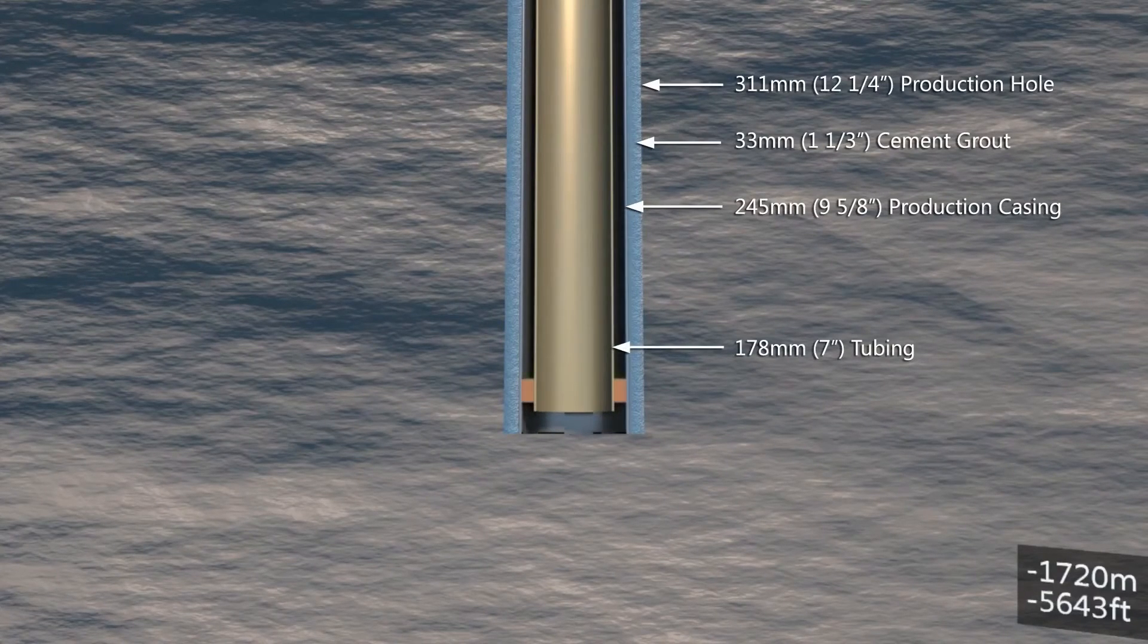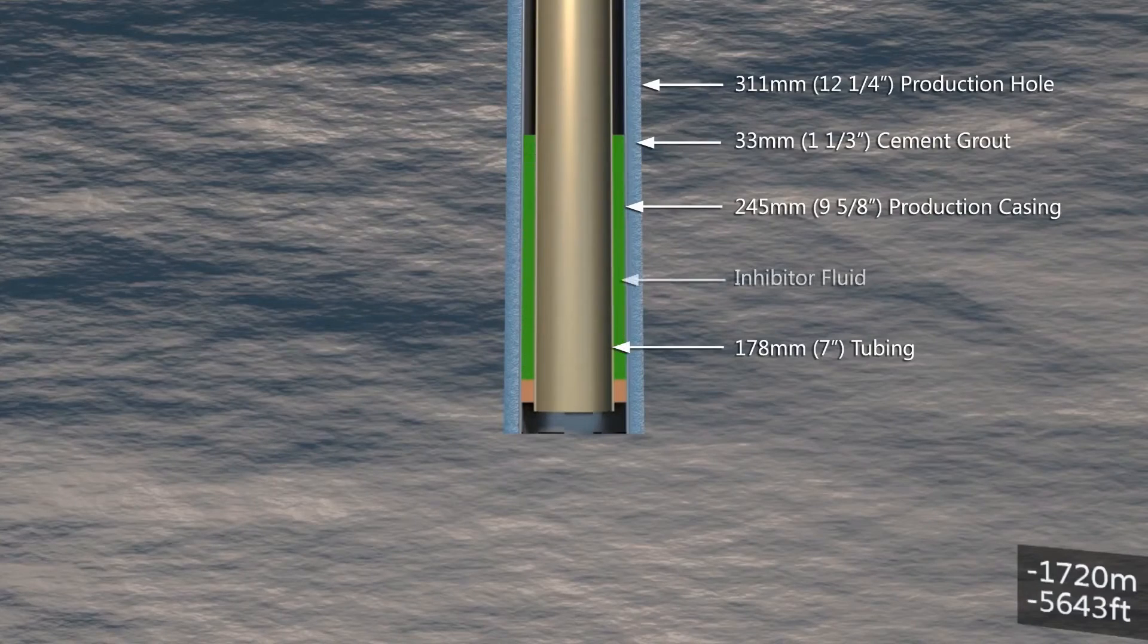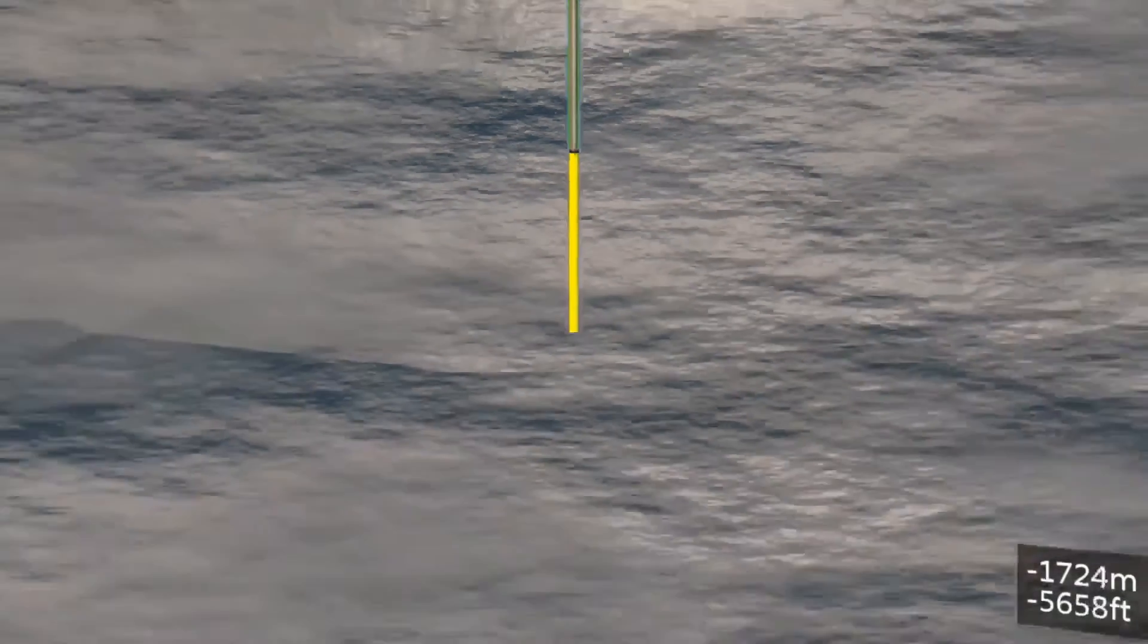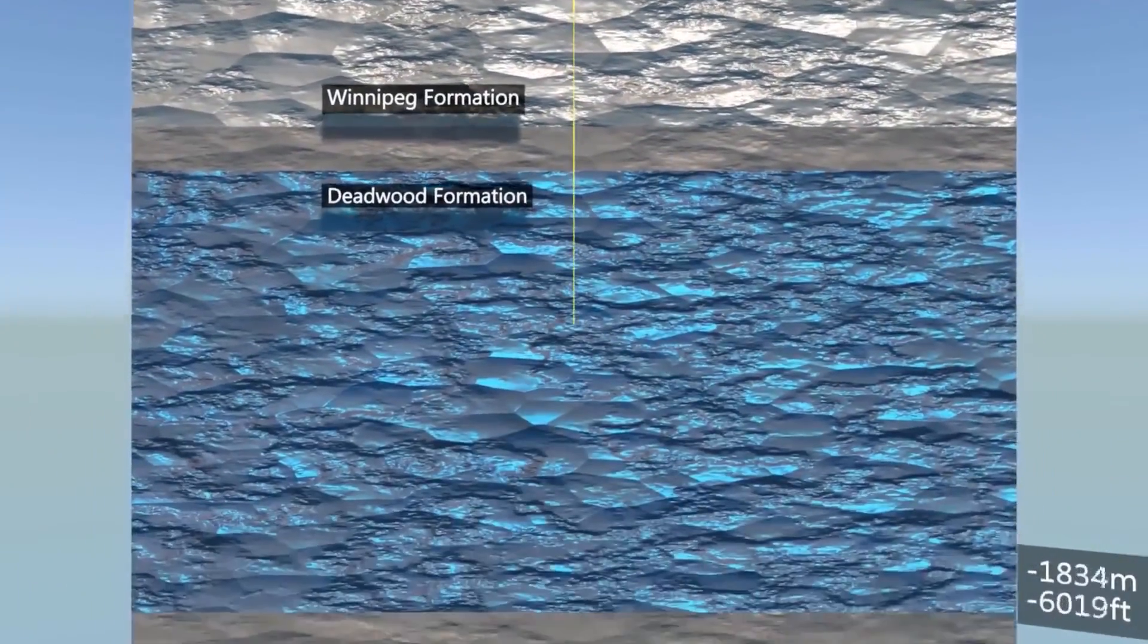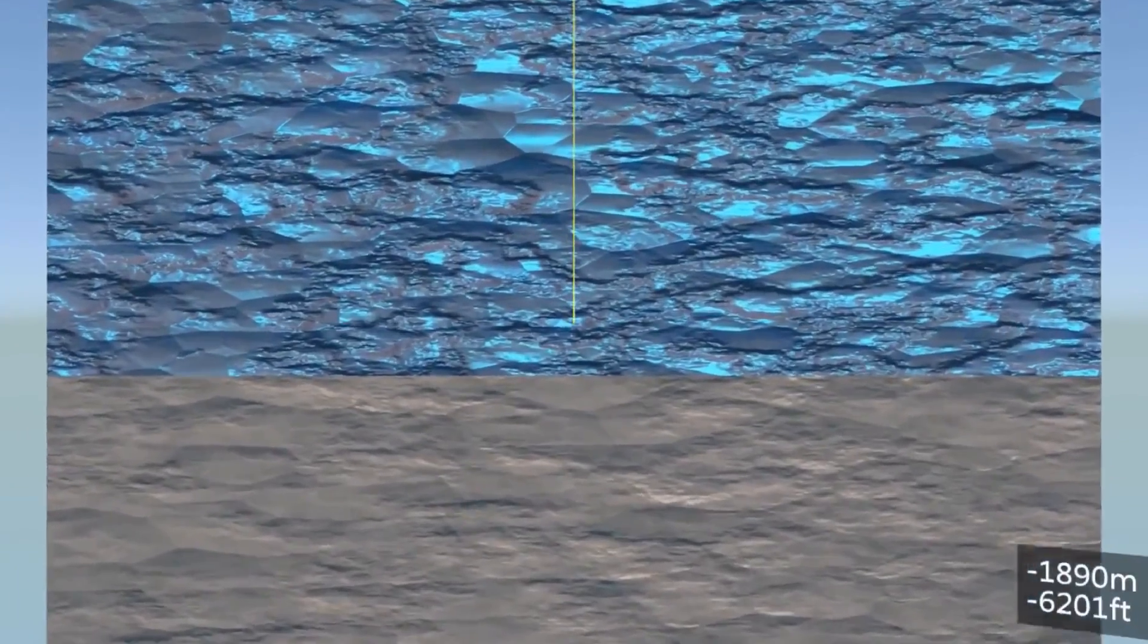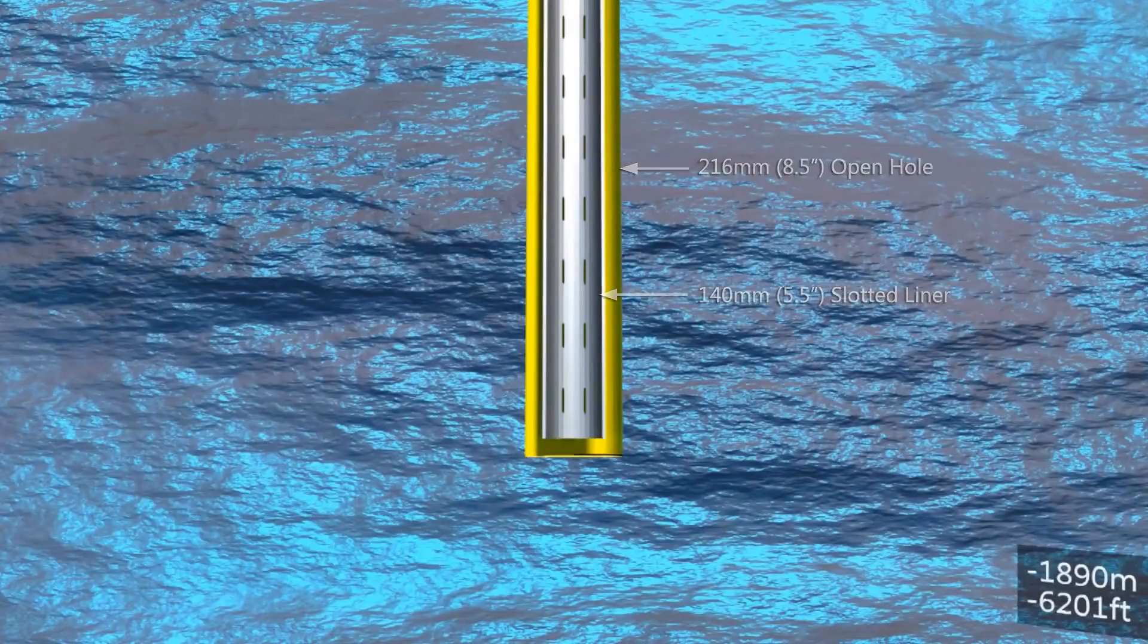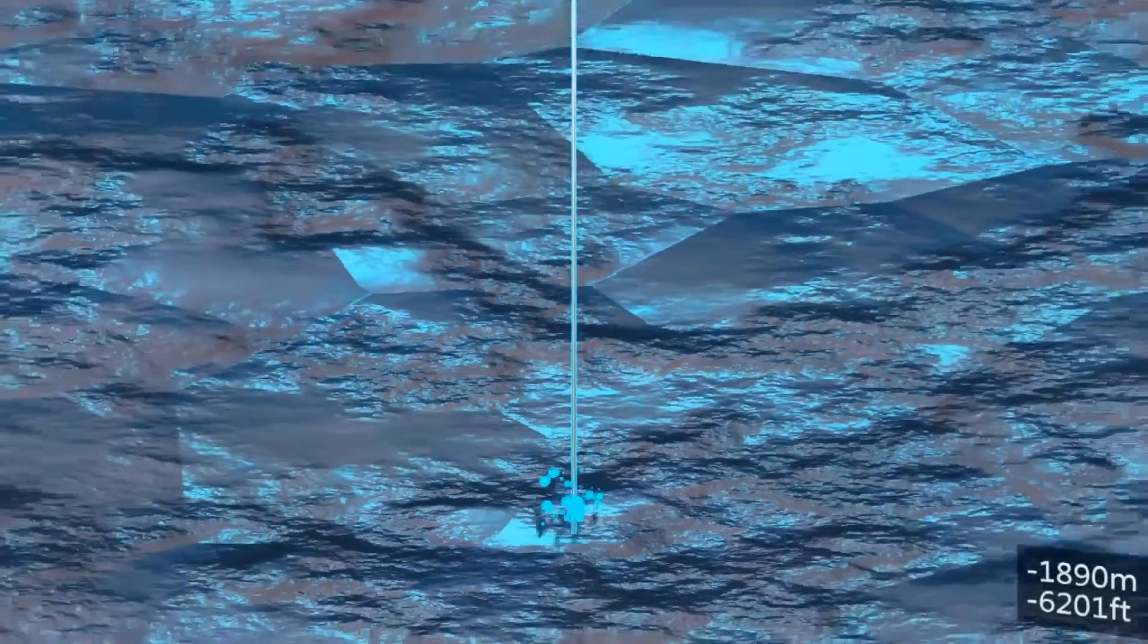The space between the tubing and the casing is filled with an inhibitor fluid. Having the void filled by the fluid gives a continuous indication of the integrity of the disposal well. A tubing is inserted down into the Deadwood and the waste brine is injected through the tubing.